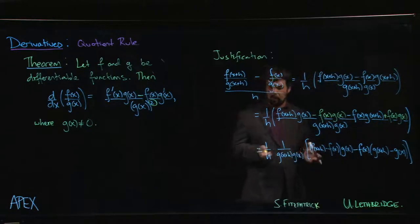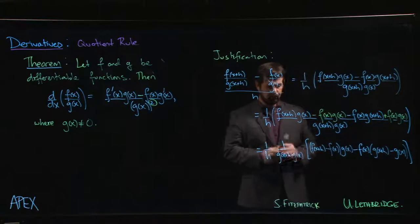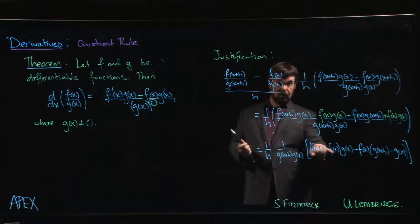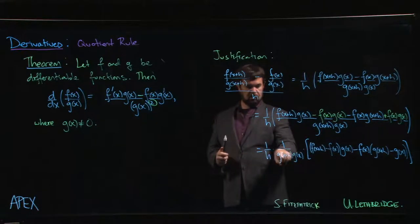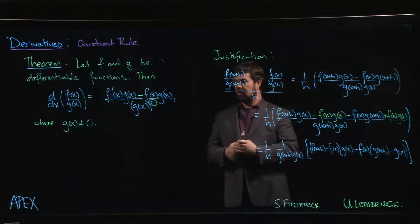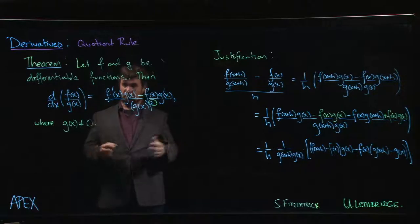So now you can see what would happen. We can divide each of these two terms by the h. We take the limit - this is going to give me an f prime, that's going to give me a g prime. When h goes to zero, this is going to be g of x times g of x. That gives us the g of x squared. So that's where the quotient rule comes from.